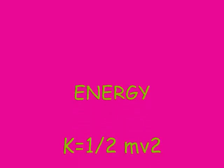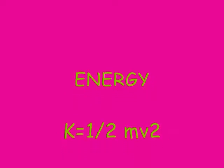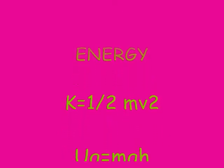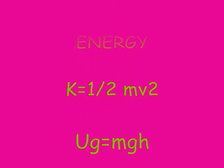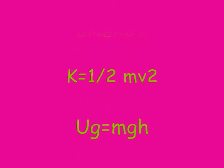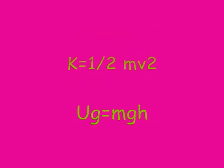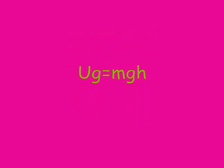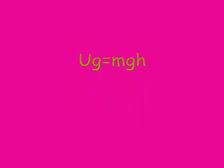The next topic we're going to do is energy. For track physics, we're only going to need two of the energy equations. The first one is kinetic energy is equal to half mass times velocity squared. The second one is potential energy is equal to mass times gravity times height.